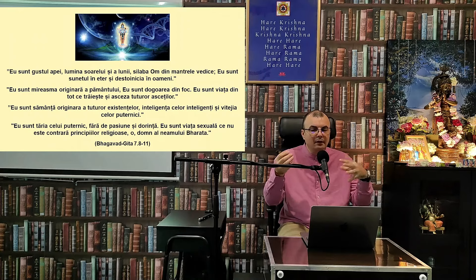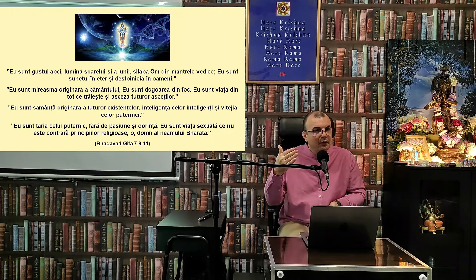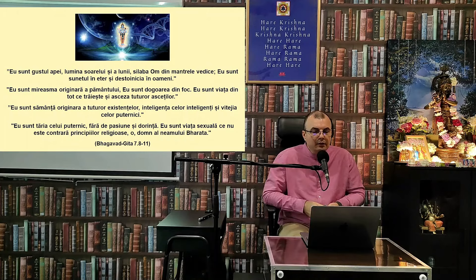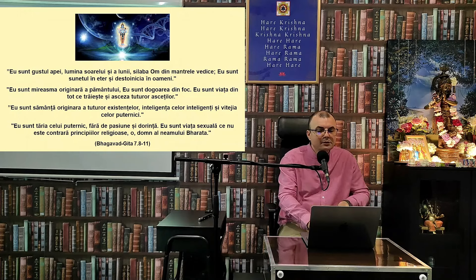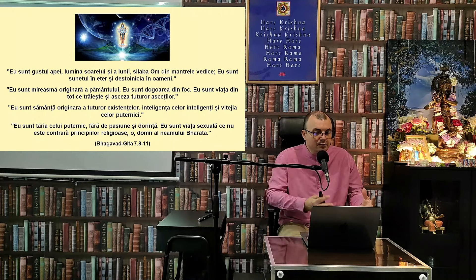Krishna descrie: Eu sunt gustul apei — unic, ceva de care avem nevoie și care nu poate fi schimbat cu nimic altceva. El spune: Eu sunt lumina soarelui și a lunii, silaba Om din mantrele vedice, sunetul în eter, destoinicia în oameni, mireasmă originară a pământului, dogoarea din foc, viața din tot ceea ce trăiește și asceza tuturor asceților. Eu sunt sămânța originară a tuturor existenților, inteligența celor inteligenți și vitejia celor puternici. Eu sunt tăria celui puternic fără de pasiune și dorință, și viața sexuală care nu este contrară principiului spiritual.